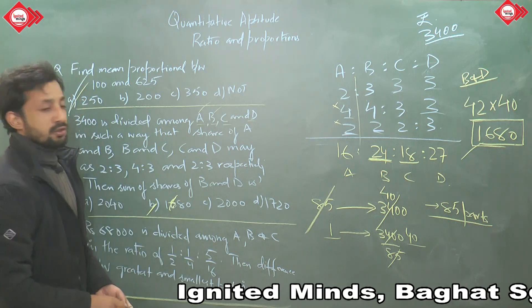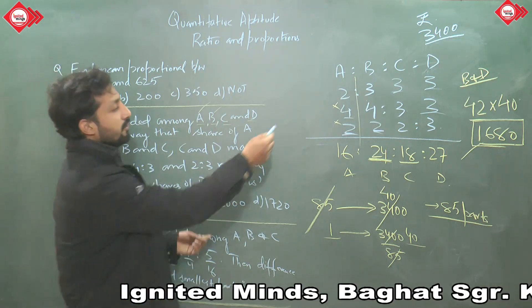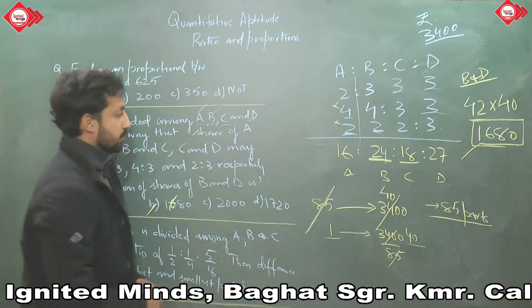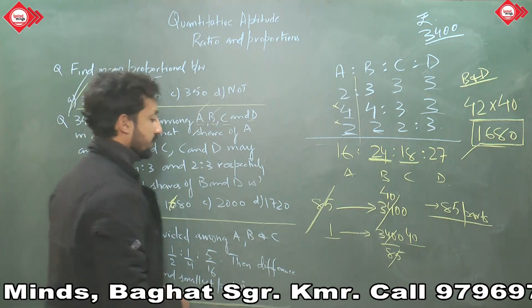One part represents 40 rupees. The question asks for the sum of shares of B and D. B has 24 parts and D has 27 parts — total 51 parts. But the instructor calculates 42 parts for B and D together: 42 × 40 = 1680. The answer is 1680 rupees.